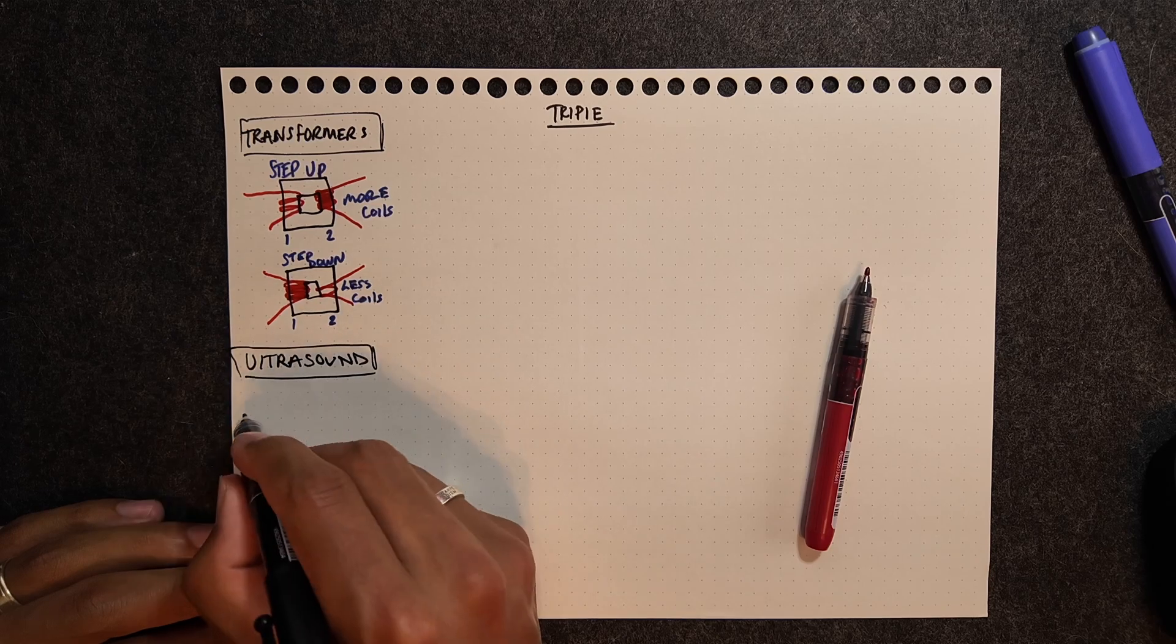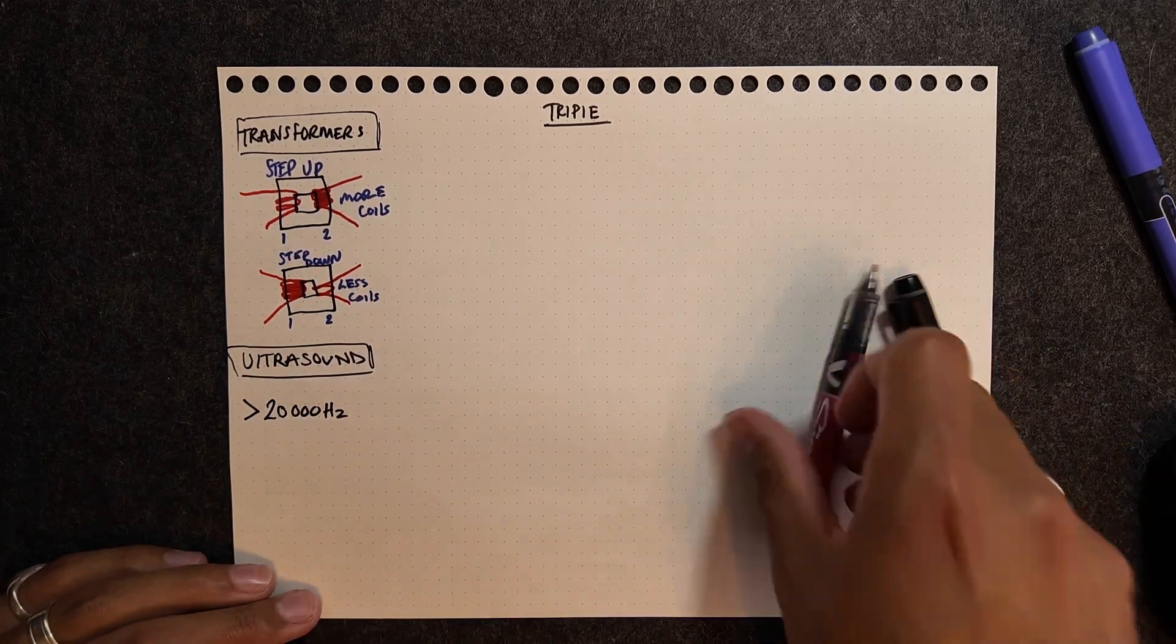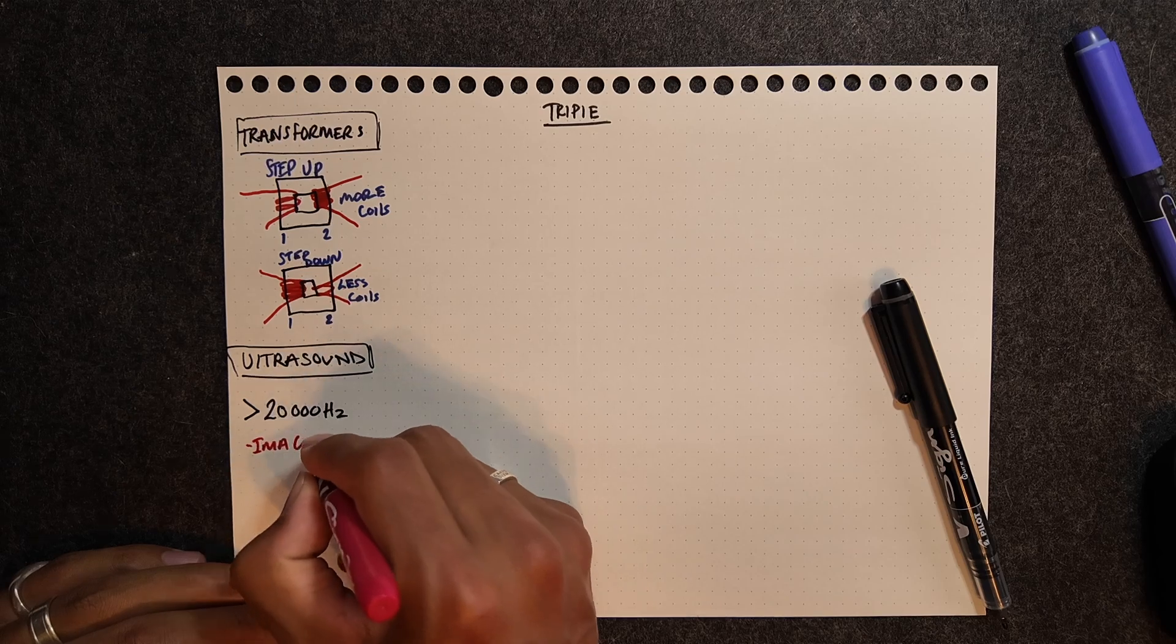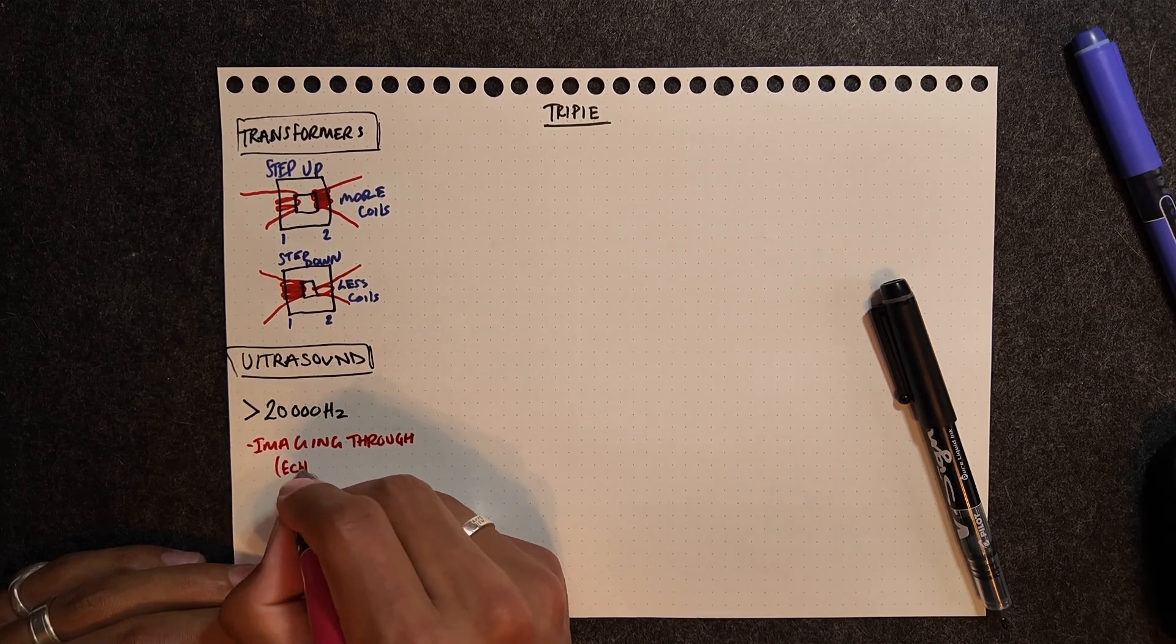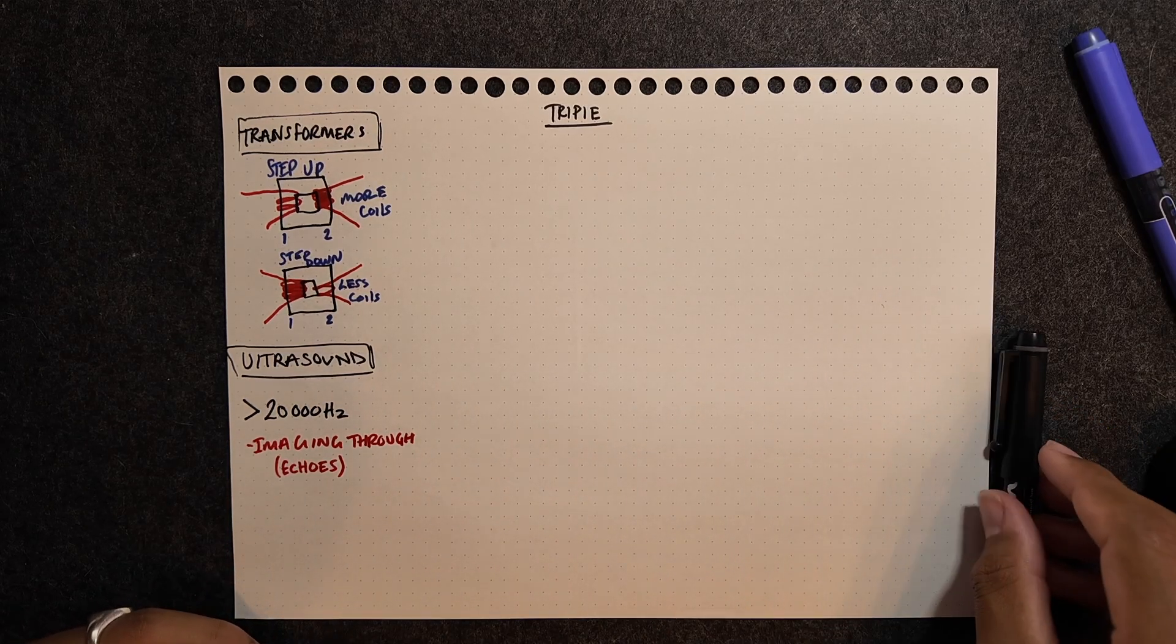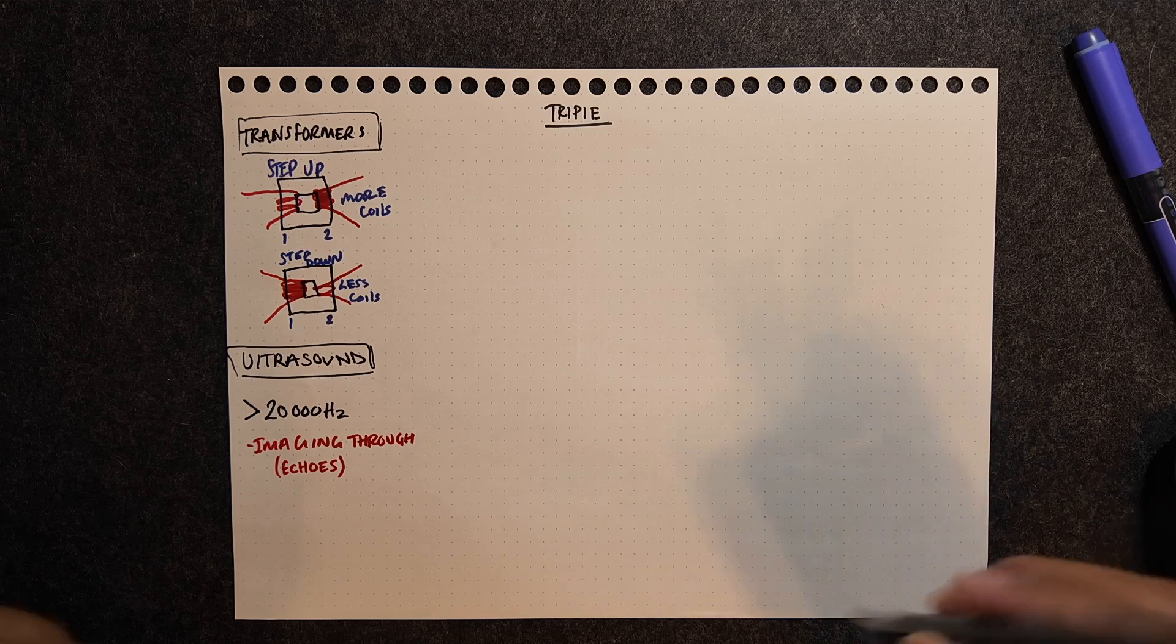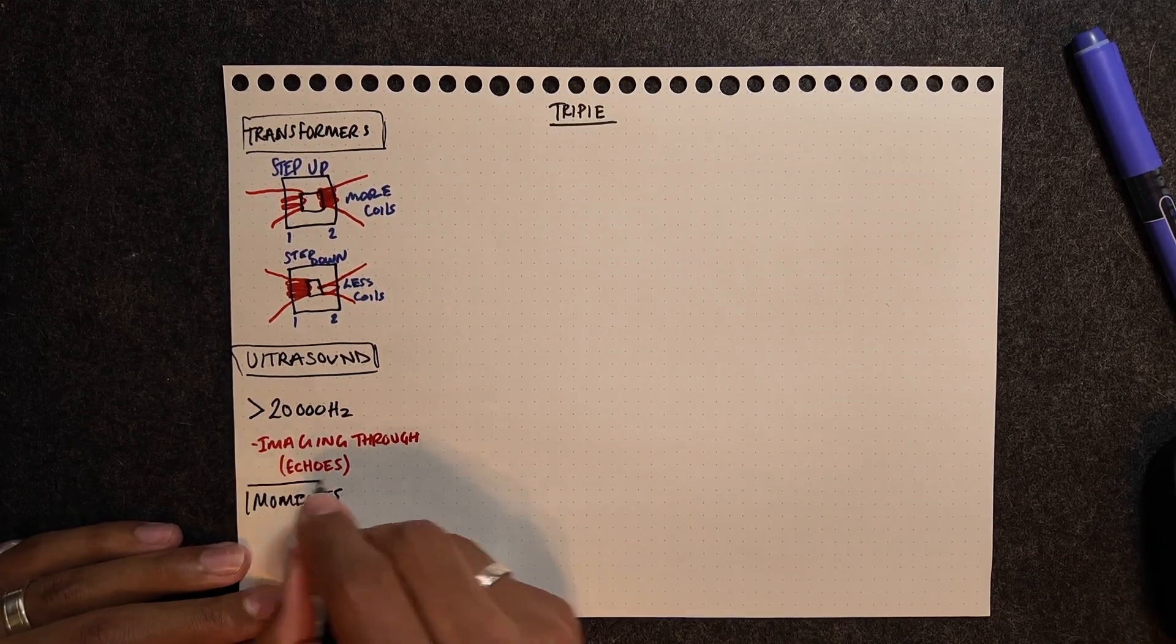Next section for triple will be to do with ultrasound. It's basically just consisting of sound waves with a frequency above 20,000 Hertz, which is much too high for us to hear. You need to know its various uses, which will be medical imaging, so like baby scans, industrial testing to detect cracks in materials like pipes, and then sonar as well to detect depth underwater.